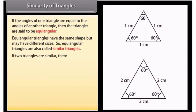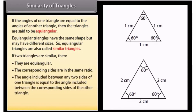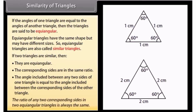If two triangles are similar, then they are equi-angular, the corresponding sides are in the same ratio, and the angle included between any two sides of one triangle is equal to the angle included between the corresponding sides of the other triangle. The ratio of any two corresponding sides in two equi-angular triangles is always the same.